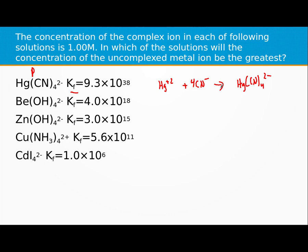And in that case, this would be your uncomplexed. And this would be the complexed. Alright, so this one wants to know which one's going to have the uncomplexed metal ion be the highest.